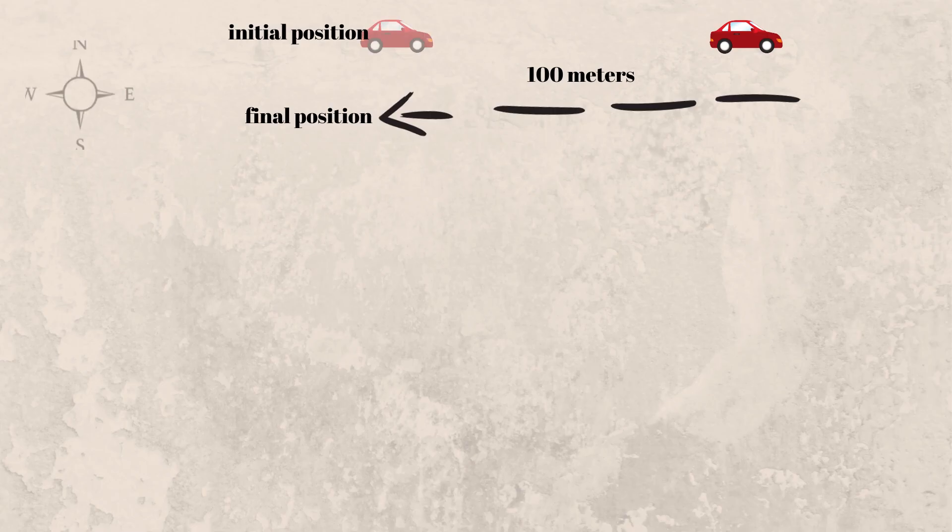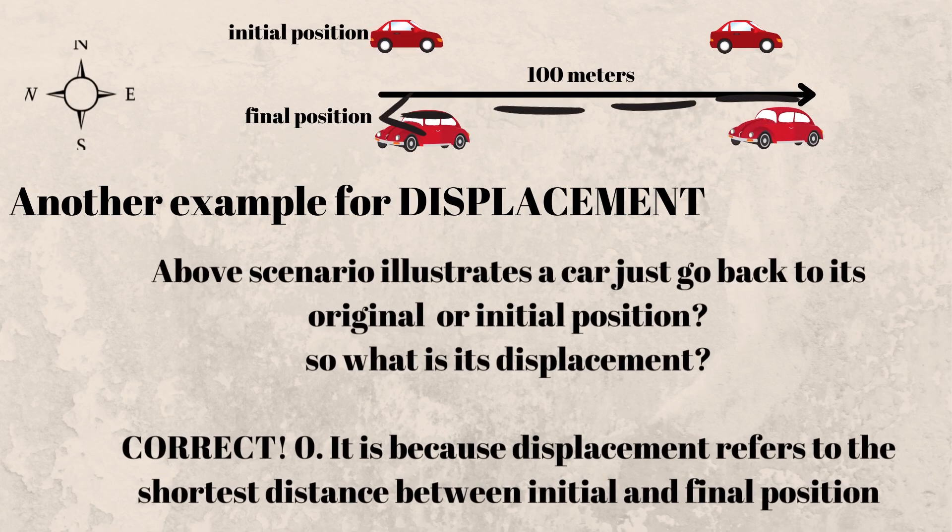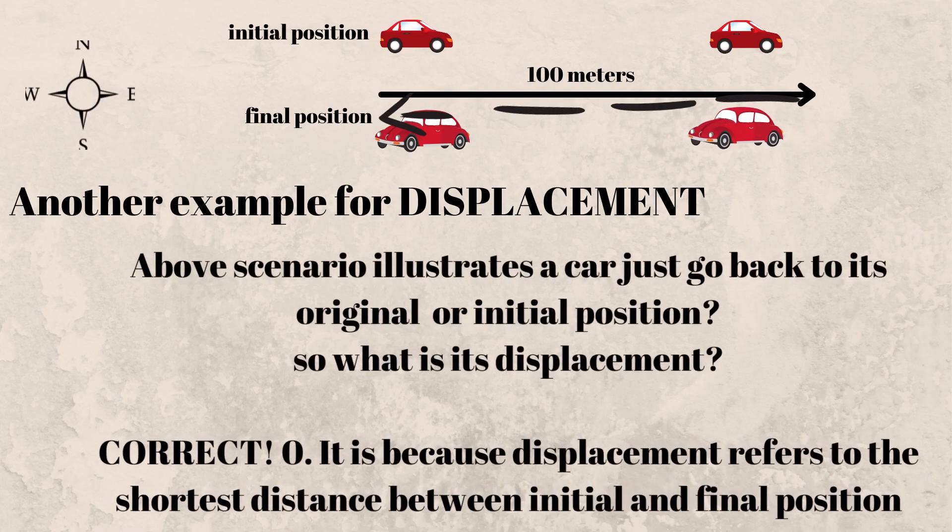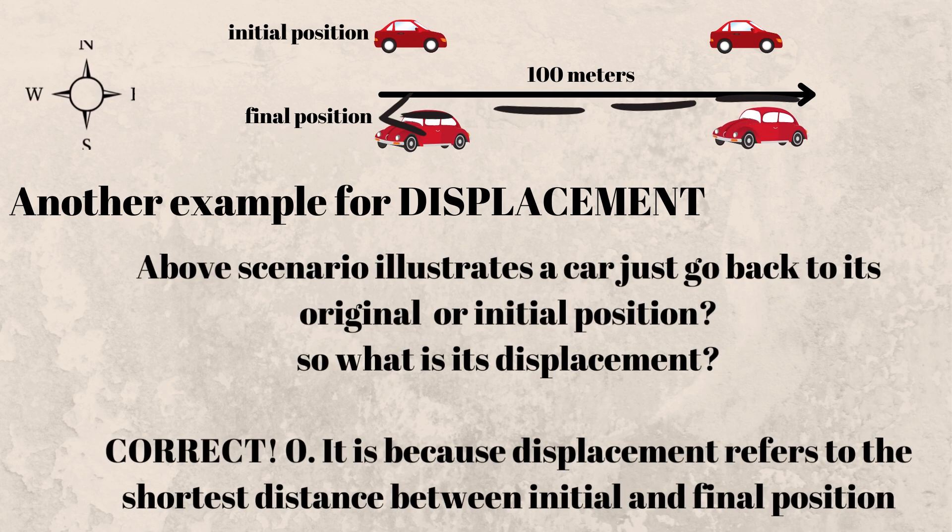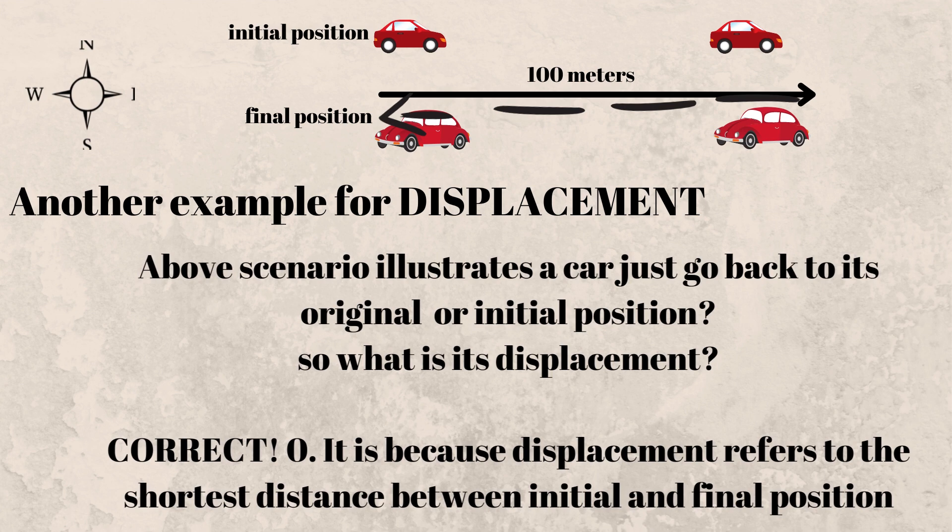Let us have another example for displacement. Above scenario illustrates a car just go back to its original or initial position. So what is its displacement? Correct, zero.